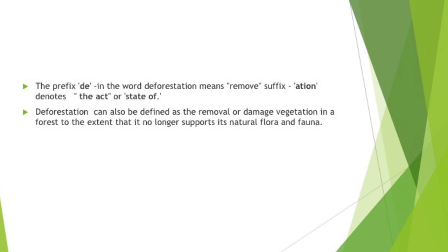Deforestation may be defined as the cutting down of trees, repeated lopping, felling and removal of litter which houses microorganisms, and grazing and trampling of seeds and seedlings. Deforestation may be temporary or permanent. The prefix 'de' means remove, and the suffix 'ation' denotes the act or state of. So deforestation can also be defined as the removal or damage of vegetation in a forest to the extent that it no longer supports its natural flora and fauna.